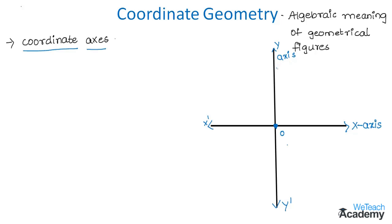The coordinate axes divide the plane into four equal parts, and each part is called a quadrant. This is the first quadrant, then the second, here we get the third quadrant, and lastly this is the fourth quadrant.